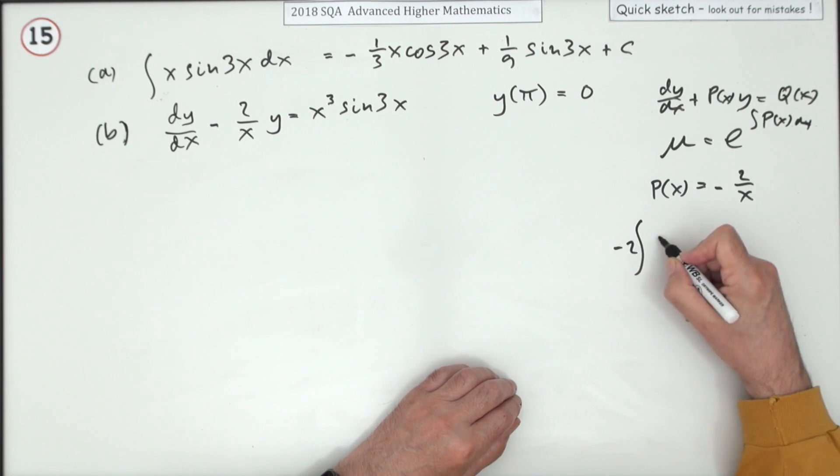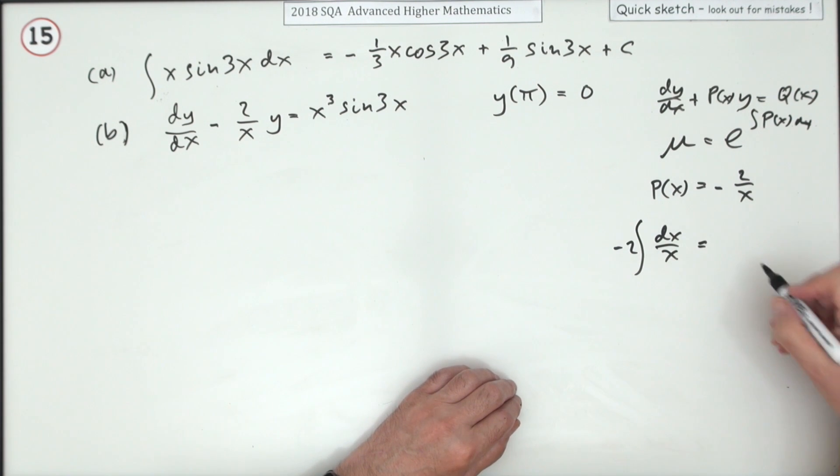Which of course is going to be negative 2 ln of x. Popping that inside, that's ln of 1 over x squared. Yes there is a plus c, but I'm just going to find this integrating factor now.